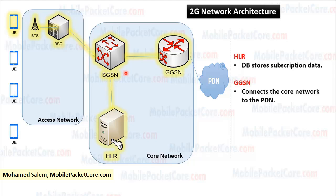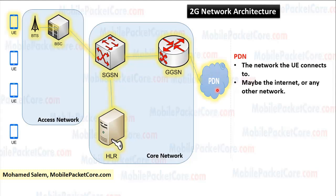Then the SGSN connects to the HLR and the GGSN. The HLR is a database that stores subscription data for all users. While the GGSN connects the core network to the PDN. The PDN is the network the UE would like to connect to, if it is the internet or any other network.